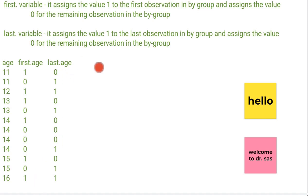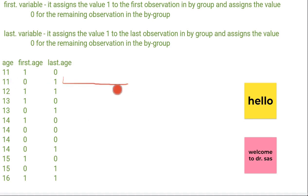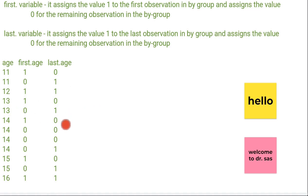Now what will last.variable do? It will do the opposite — it assigns the value 1 to the last observation in the by group, and assigns 0 for the remaining observations. So 11 is occurring first time here, it will give 0; last time 11 is occurring, it will give value 1. For 12, it is occurring only once, so first.age will be 1 and last.age will also be 1. 13 is occurring twice, so first it gives 0 and then for the second it gives 1. 14 is occurring 4 times — the last time it gives 1 and for the remaining observations 0. This is the basics of first.variable and last.variable.